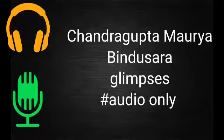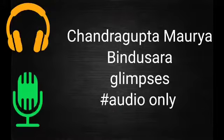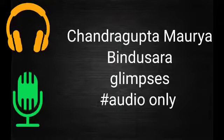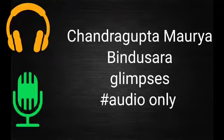Bindusara ruled from 297 BCE to 273 BCE. He is also called Amitraghata, that is 'slayer of foes,' or Amitrochates in Greek sources. According to some scholars, Bindusara conquered the Deccan up to Mysore. Bindusara conquered sixteen states comprising the land between the two seas, confirmed by Taranatha, the Tibetan monk. According to Sangam literature, Mauryas invaded the far south, and so he became famous as Amitraghata.